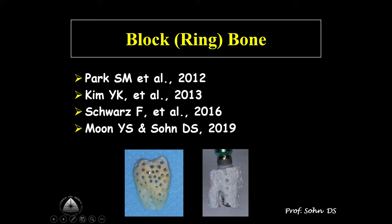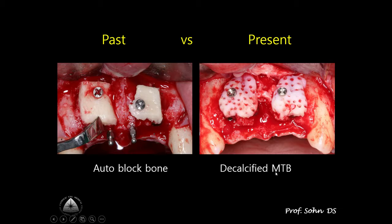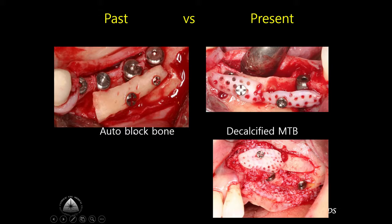This is the tooth block — thick block — and this is the ring MTB block. This slide shows my old-fashioned ridge augmentation using autologous block bone, and this is my present technique: a simple technique using patient's extracted teeth. The right side shows simplified ridge augmentation using tooth block bone — demineralized block bone.